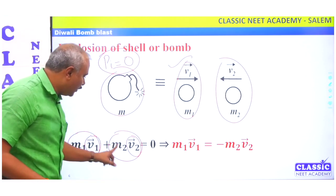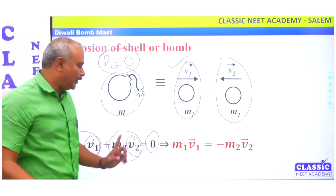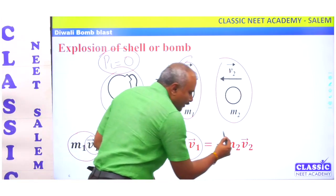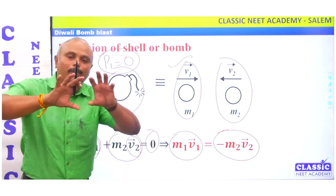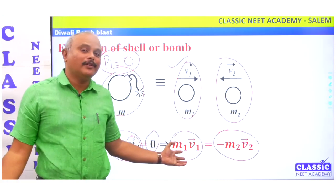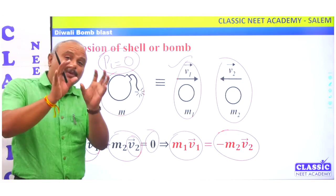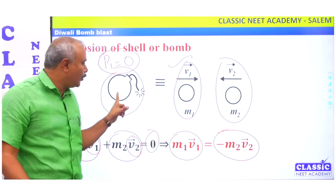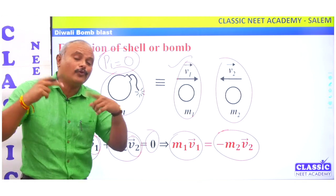If you get these two momenta, they will sum to zero. M1V1 is equal to minus M2V2 — the two particles move in opposite directions. This is the conservation of momentum. In this case, the chemical energy comes from internal energy. There is no external energy or external force.